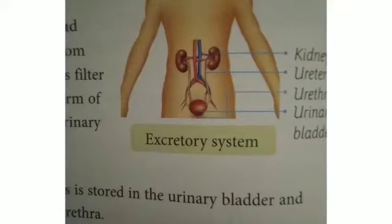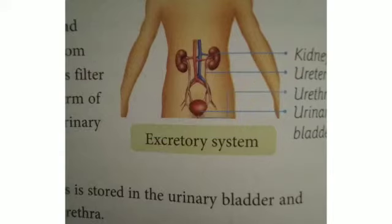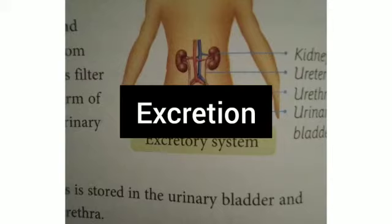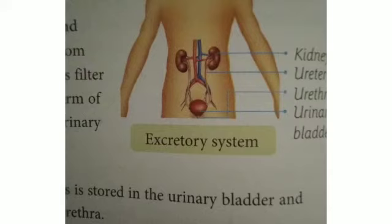The next organ system is the excretory system, which consists of the kidneys, ureters, urinary bladder, and the urethra. The elimination of waste from our body is called excretion. Kidneys filter waste products to form urine, and this urine is carried to the urinary bladder through thin tubes called ureters. The urine collected from ureters is stored in the urinary bladder and excreted through a passage called the urethra.